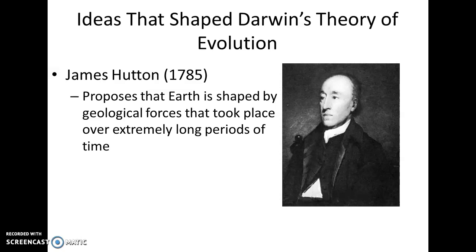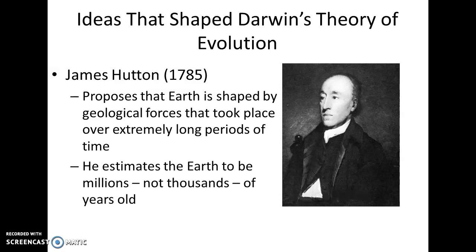During this time, special creation was the big idea for how life and Earth originated, so people thought the Earth was only a couple thousand years old. James Hutton's idea estimated the Earth to be millions — not just thousands — of years old. Scientists started looking at the creation of Earth as a longer process than originally thought. This helped shape Darwin's theory of evolution, showing that life had existed for a very long time and these changes take a very long time.